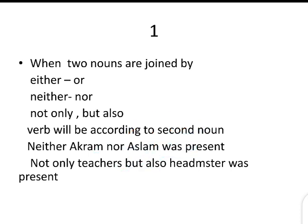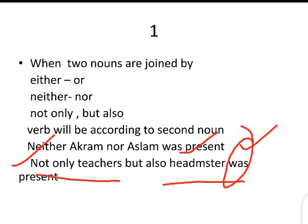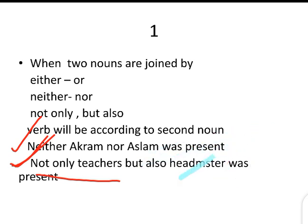'Not only the teachers but also the headmaster was present.' Here, teachers is plural, but the second noun — headmaster — is singular. So according to the singular second noun, we use 'was'. With either/or, neither/nor, not only/but also, the verb always agrees with the second noun. The first noun, whether singular or plural, we are not concerned with this.